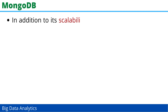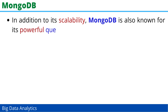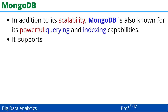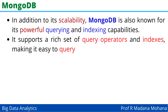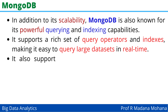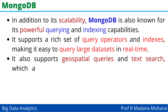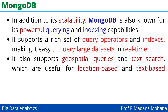In addition to its scalability, MongoDB is also known for its powerful querying and indexing capabilities. It supports a rich set of query operators and indexes, making it easy to query large datasets in real time. It also supports geospatial queries and text search, which are useful for location-based and text-based applications.